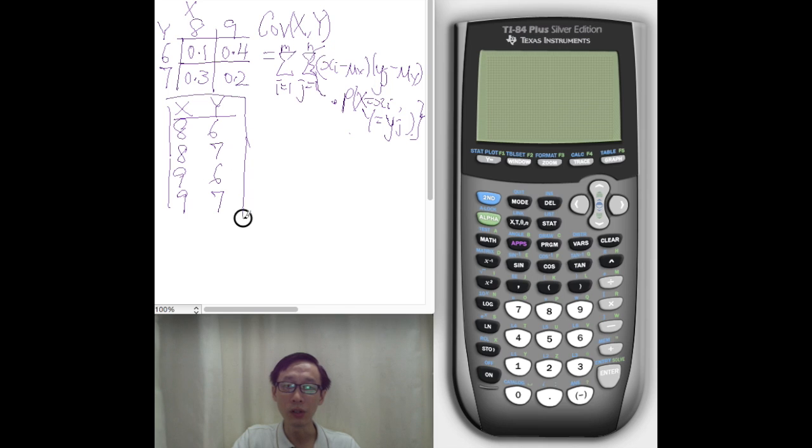Now, for each of these unique pairs, you will then enter into another list, for example L3, the joint probability distribution. So what's the joint probability when X is 8, Y is 7? For example, then you enter 0.3.